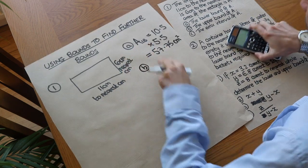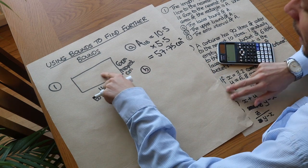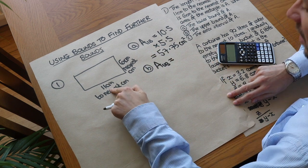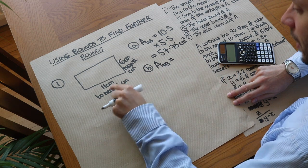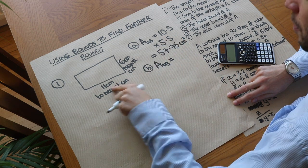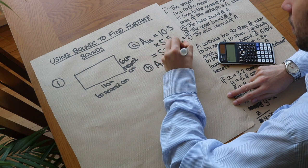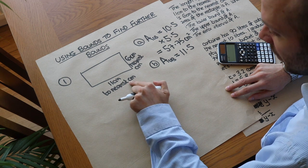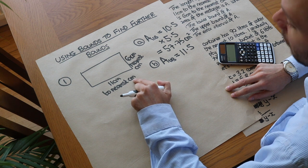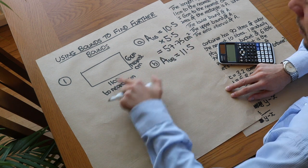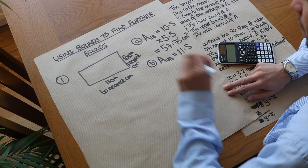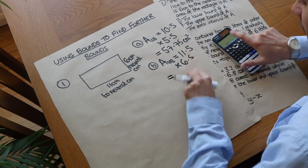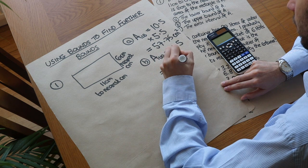For part B we want the upper bound — the greatest value the area could have. We use the biggest possible length and the biggest possible width. The quick way is to add or subtract half the accuracy: accuracy is to the nearest one centimetre, so half is 0.5. That gives 11.5 for the upper bound of the length, and 6.5 for the upper bound of the width. Multiplying those gives 74.75 centimetres squared.